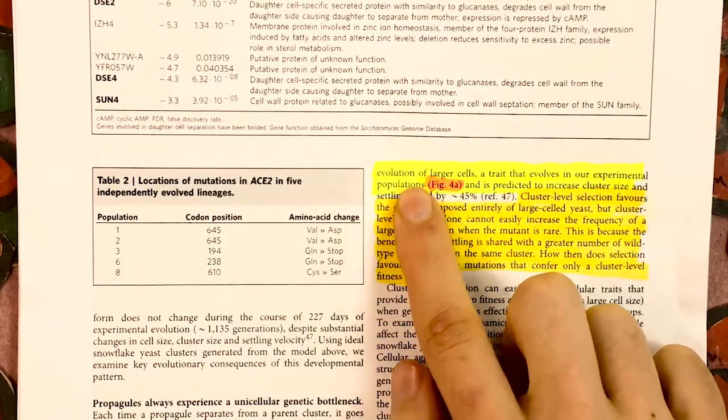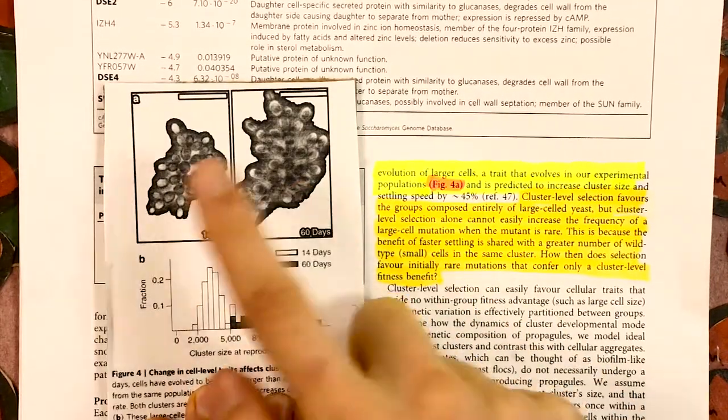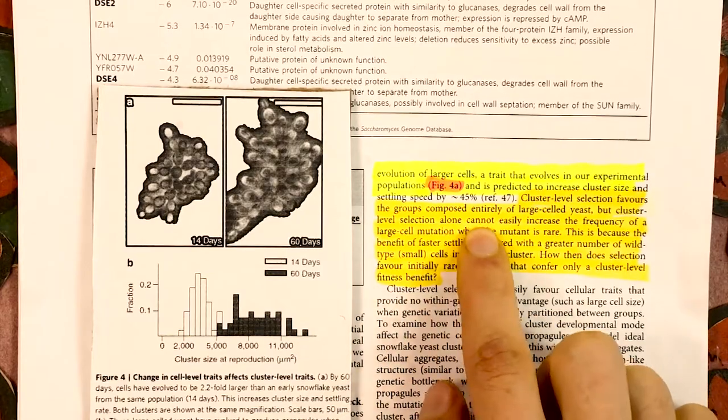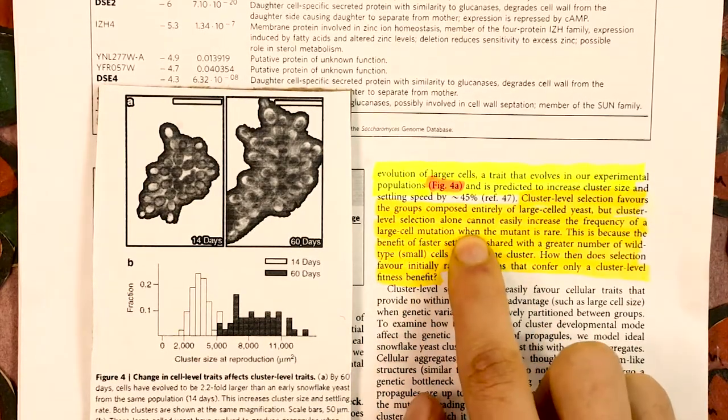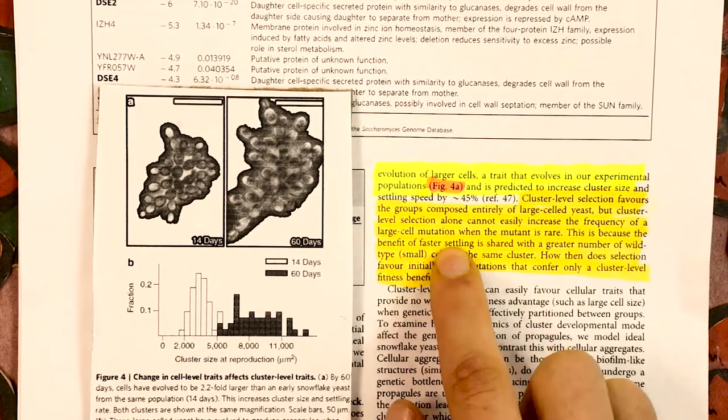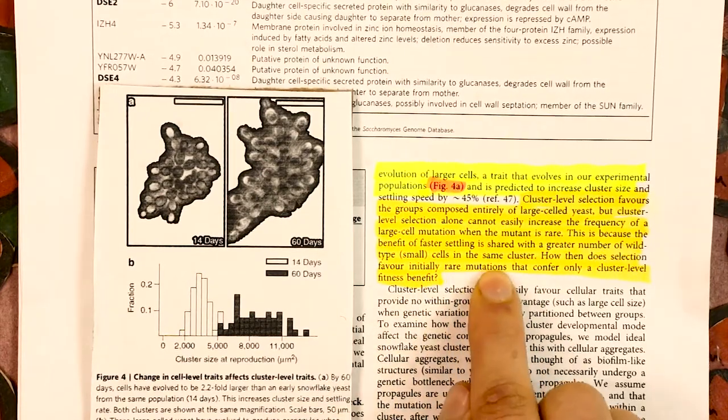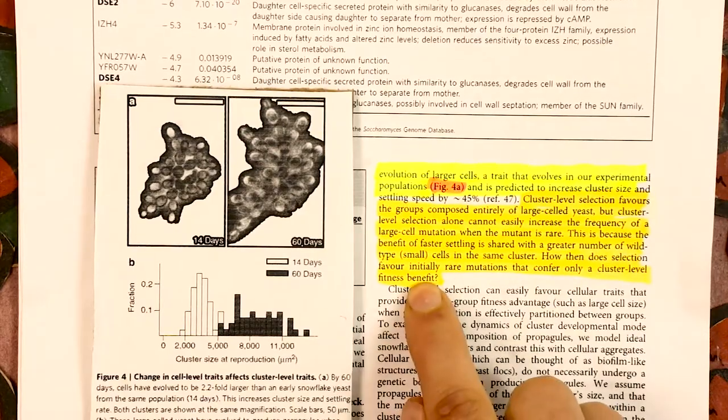Consider the evolution of larger cells, the paper says. A trait that evolves in our experimental populations, like in this figure here. See how these cells are a lot bigger than these ones? Cluster-level selection favors the groups composed entirely of large-celled yeast, but cluster-level selection alone cannot easily increase the frequency of a large-celled mutation when the mutant is rare. This is because the benefit of faster settling is shared with a greater number of small cells in the same cluster. How, then, does selection favor initially rare mutations that confer only a cluster-level benefit?